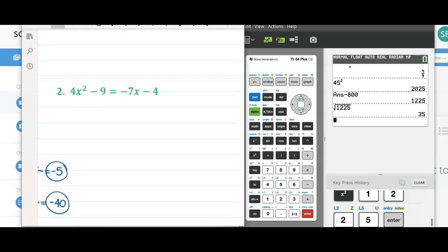In the next example, again, the hardest part is getting it into standard form so we can easily see what a, b, and c equal.